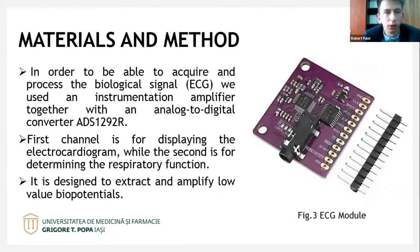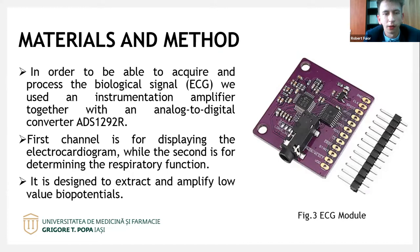In order to acquire and process the biological signal — ECG — we use an instrumentation amplifier together with an analog-to-digital converter. The first channel is for displaying the electrocardiogram, and the second is for determining the respiratory function. It is designed to extract and amplify low-value biosignals.